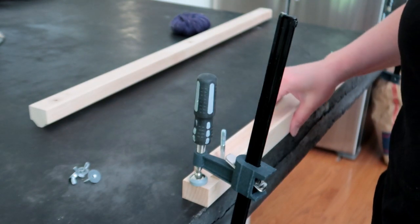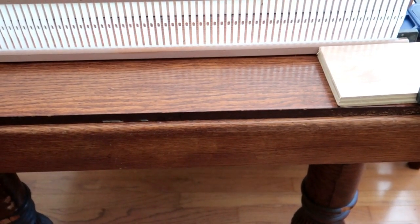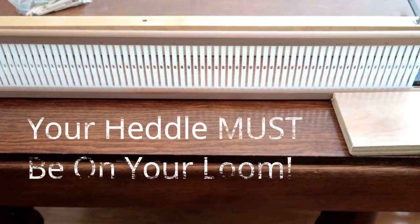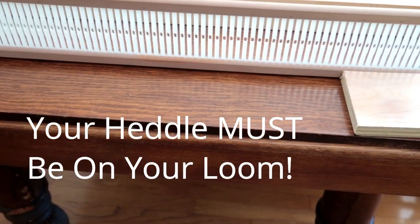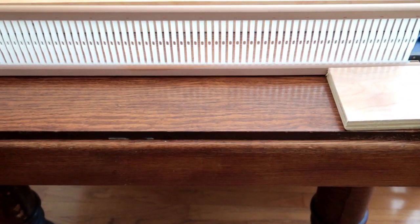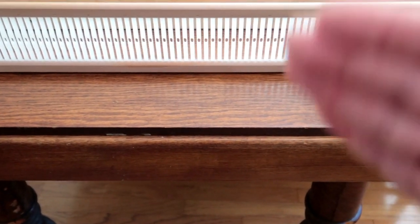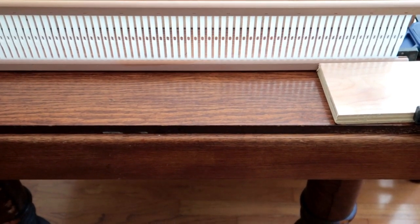I'm gonna warp this for a 5 dpi heddle, and this is actually set up as a loom because my loom is dressed and I can't use it for this right now, but it's no different. If this heddle was in your loom, this is exactly how you're gonna do it.